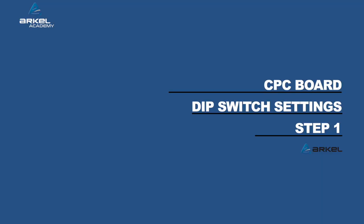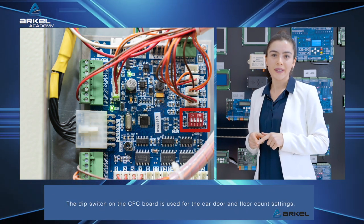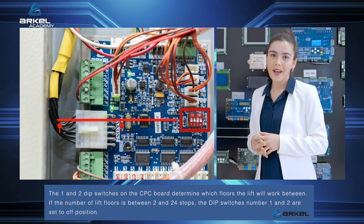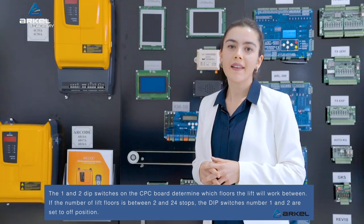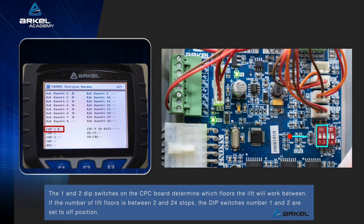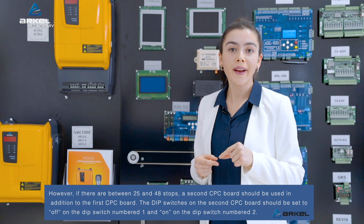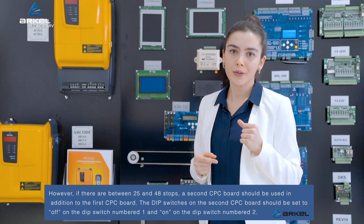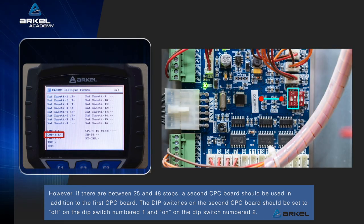CPC board dip switch settings. The dip switch on the CPC board is used for the car door and floor count settings. Dip switches 1 and 2 determine which floors the lift will work between. If the number of lift floors is between 2 and 24 stops, dip switches 1 and 2 are set to off. If there are between 25 and 48 stops, a second CPC board should be used. The dip switches on the second CPC board should be set to off on switch 1 and on on switch 2.